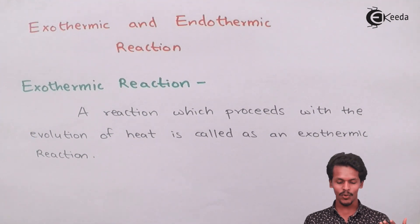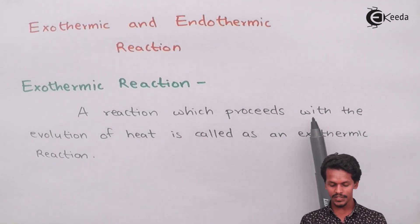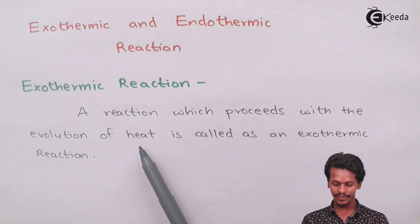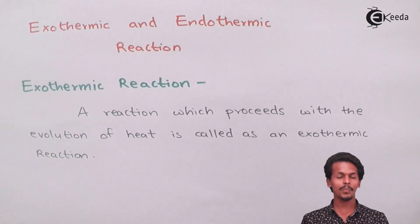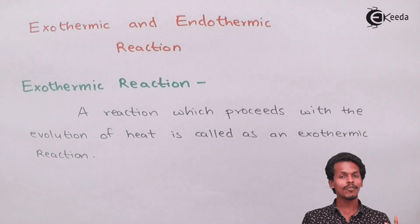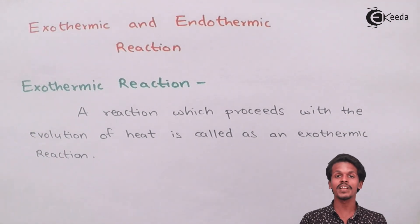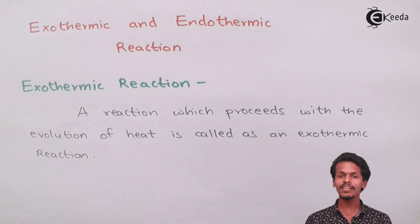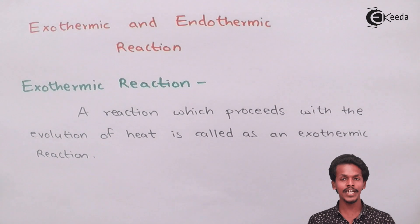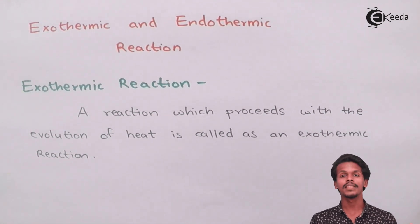First of all, let us talk about what is an exothermic reaction. A reaction which proceeds with the evolution of heat is called an exothermic reaction. The evolution of heat is only possible if the amount of heat is released from the system during a reaction.